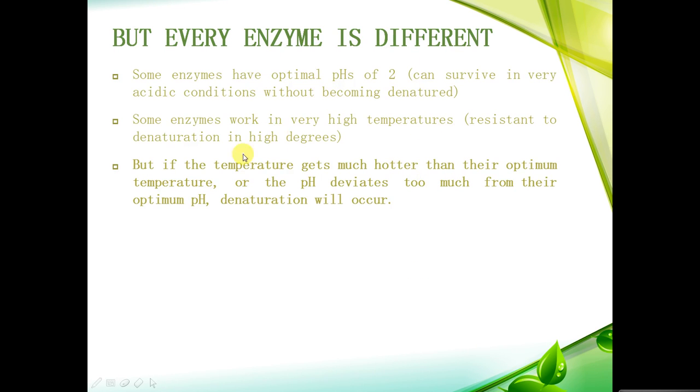Every enzyme is different. Some enzymes have optimum pHs of like 2. This means they can survive in really acidic conditions without becoming denatured. Some enzymes work in really high temperatures, and they're resistant to denaturation in really high degrees.